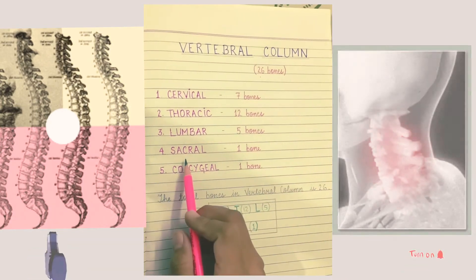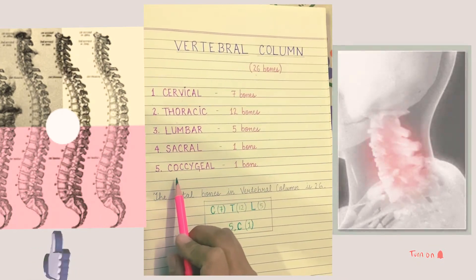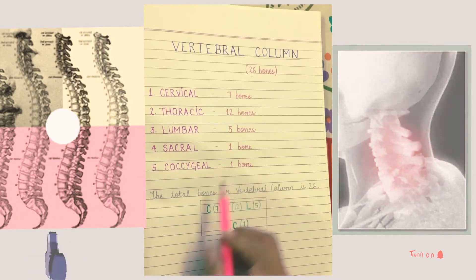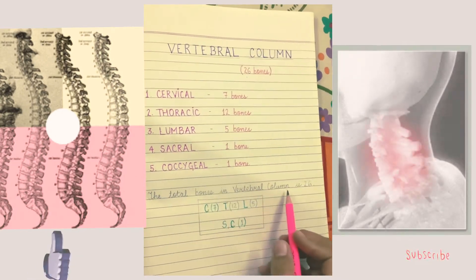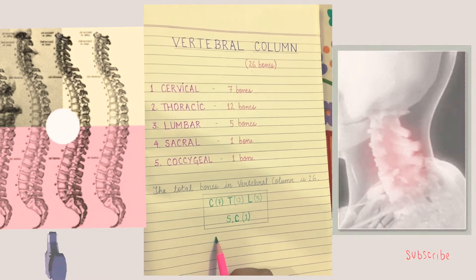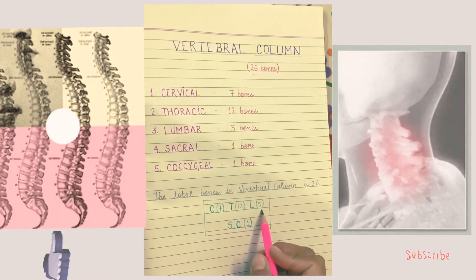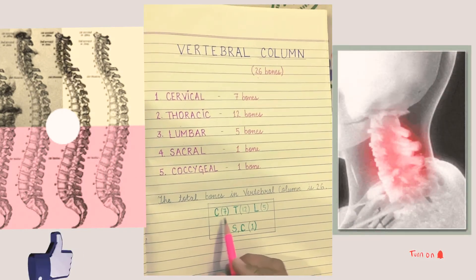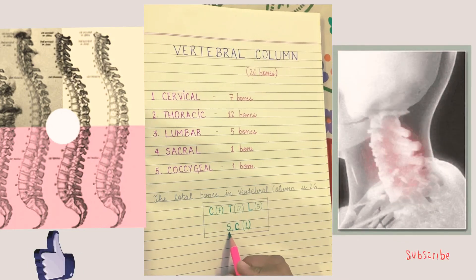In sacral, one bone is present; in coccygeal, one bone is present. The total bones in the vertebral column is 26. We can memorize this with C7, T12, L5, SC1 — C means cervical, T means thoracic, L means lumbar, S means sacral, and C means coccygeal.